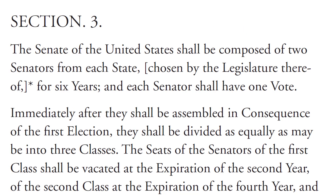Section 3. The Senate of the United States shall be composed of two senators from each state, chosen by the legislature thereof for six years, and each senator shall have one vote. Immediately after they shall be assembled in consequence of the first election, they shall be divided as equally as may be into three classes.